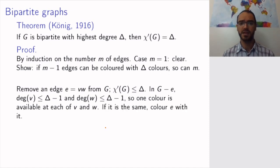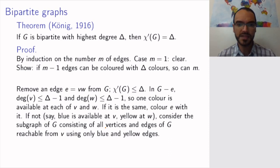There is nothing that guarantees that. The bad situation is if different colors are available at v and w. Since we're free to call our colors whatever we want, let's say that blue is available at v and yellow is available at w, meaning that v has no other blue edge coming into it, and w has no other yellow edge coming into it.